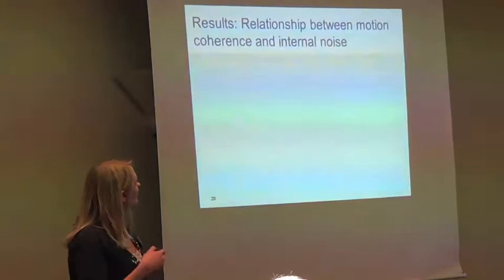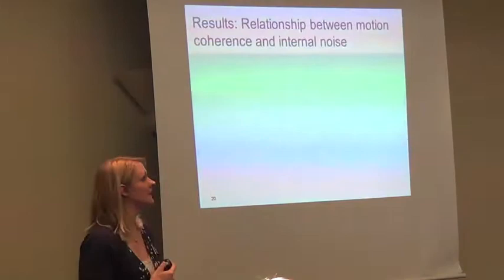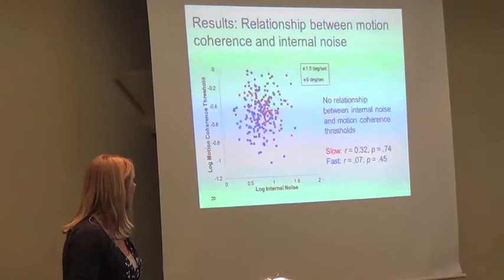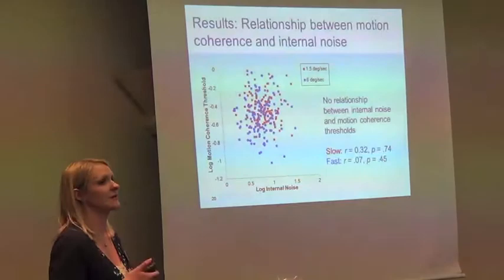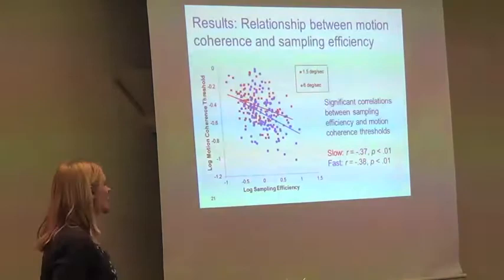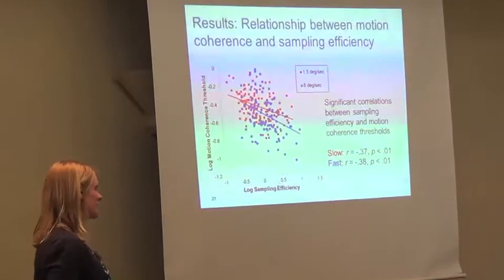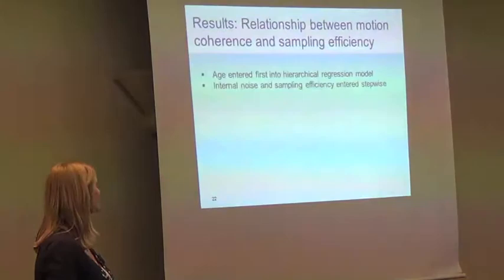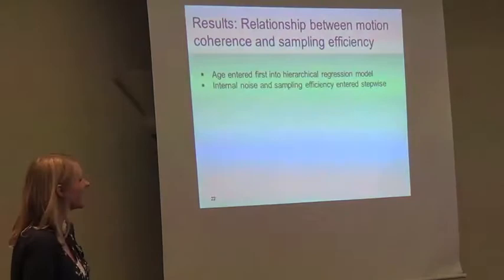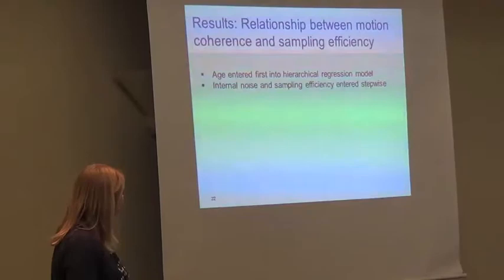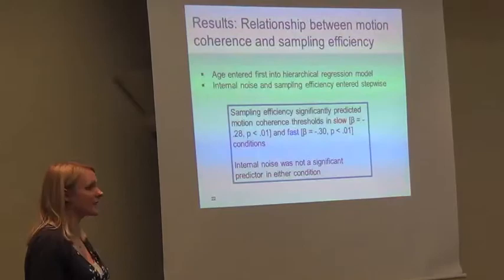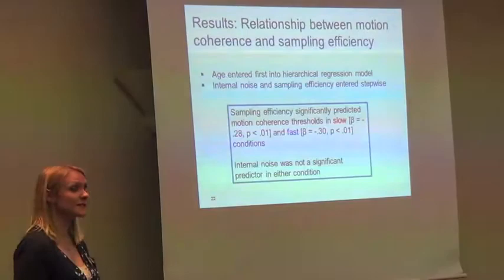So we know internal noise reduces with age and sampling efficiency increases. But how does this relate to the standard motion coherence paradigm? For internal noise, we find no relationship between internal noise and motion coherence thresholds. But sampling efficiency does: higher sampling efficiency is related to lower motion coherence thresholds for both the slow and fast conditions. In a regression model where we put age in first and then added internal noise and sampling efficiency together, sampling efficiency significantly predicts motion coherence thresholds above and beyond the effect of age, for both slow and fast conditions, whereas internal noise does not.